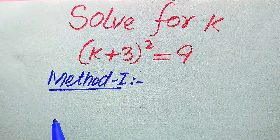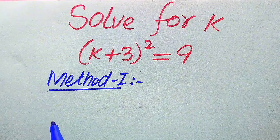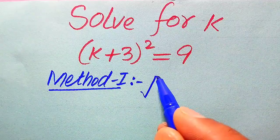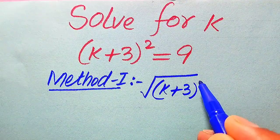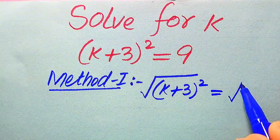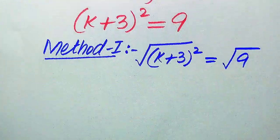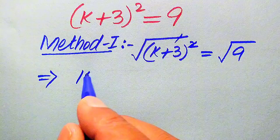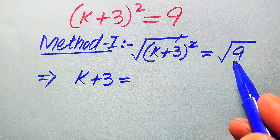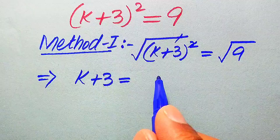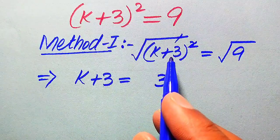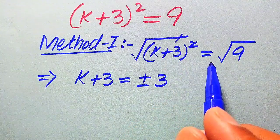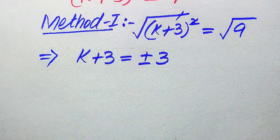Now we move towards our first method. In the first method we solve this problem with the help of square root. We need to take square root on both sides, so it is written as √((k + 3)²) = √9. The two and the root cancel out and we get k + 3 = ±3. When you apply square root on both sides, we write a plus-minus sign on one side.